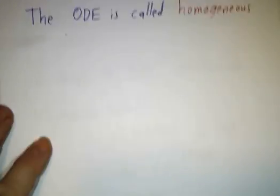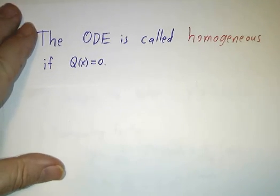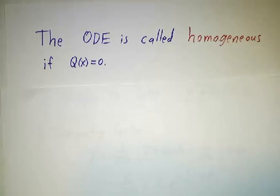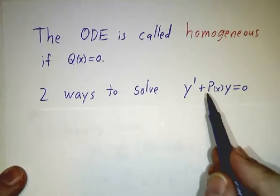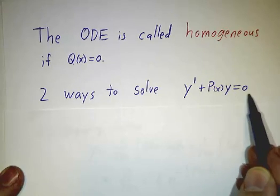Last comment is that something very special happens if the right-hand side is 0. These are called homogeneous linear equations. And they're actually two different ways to solve the equation y' plus p equals 0.